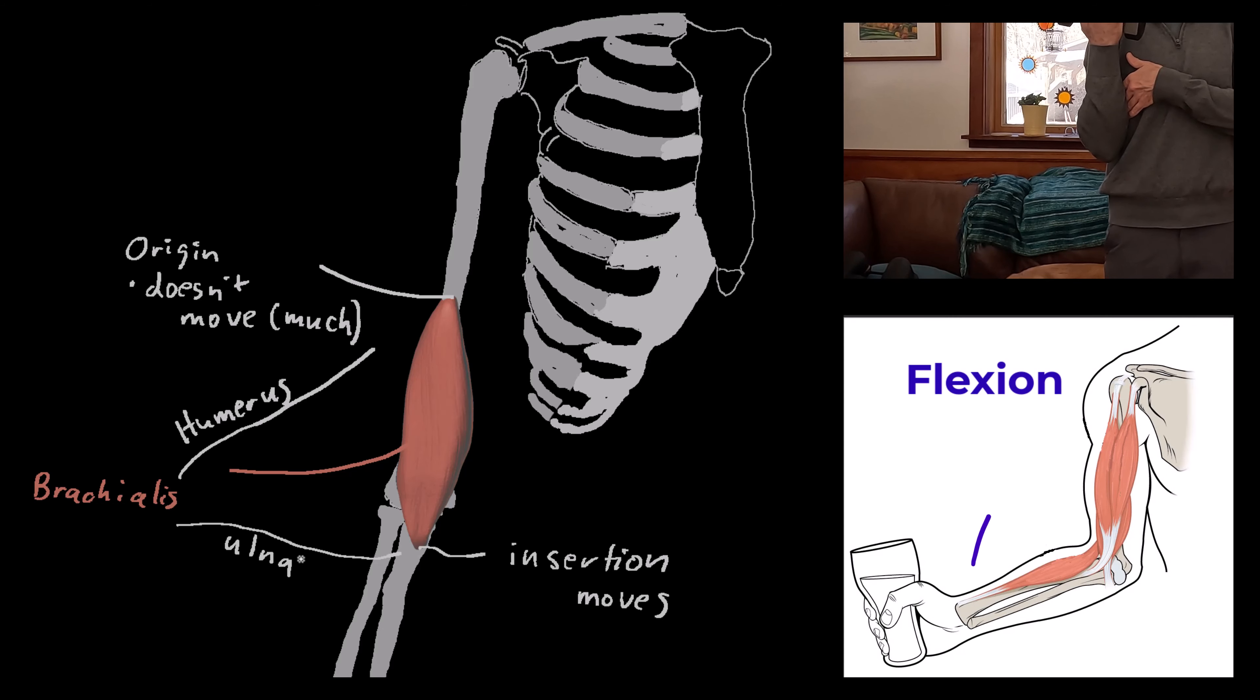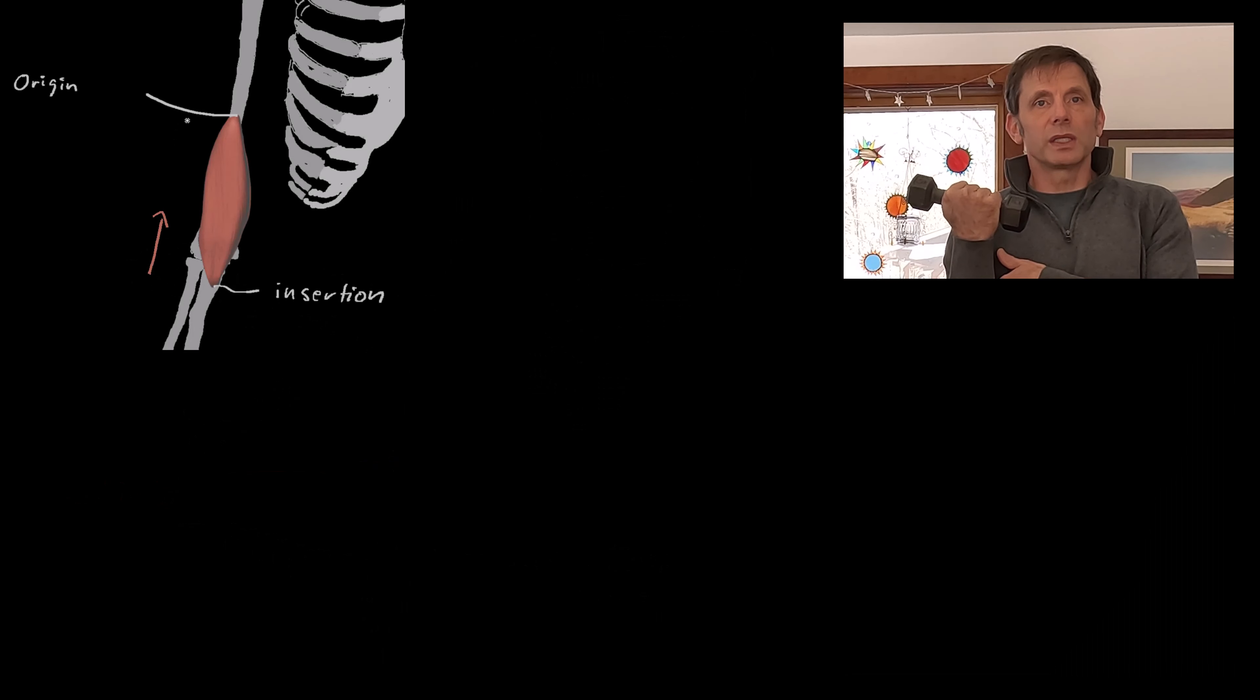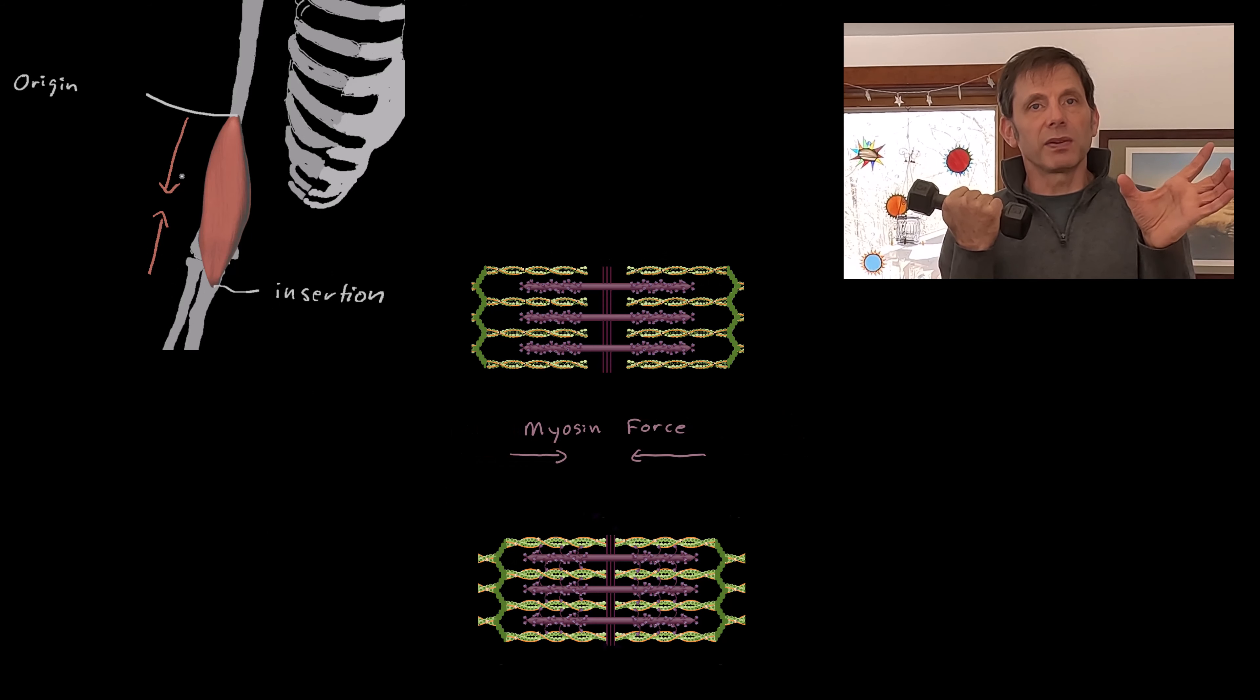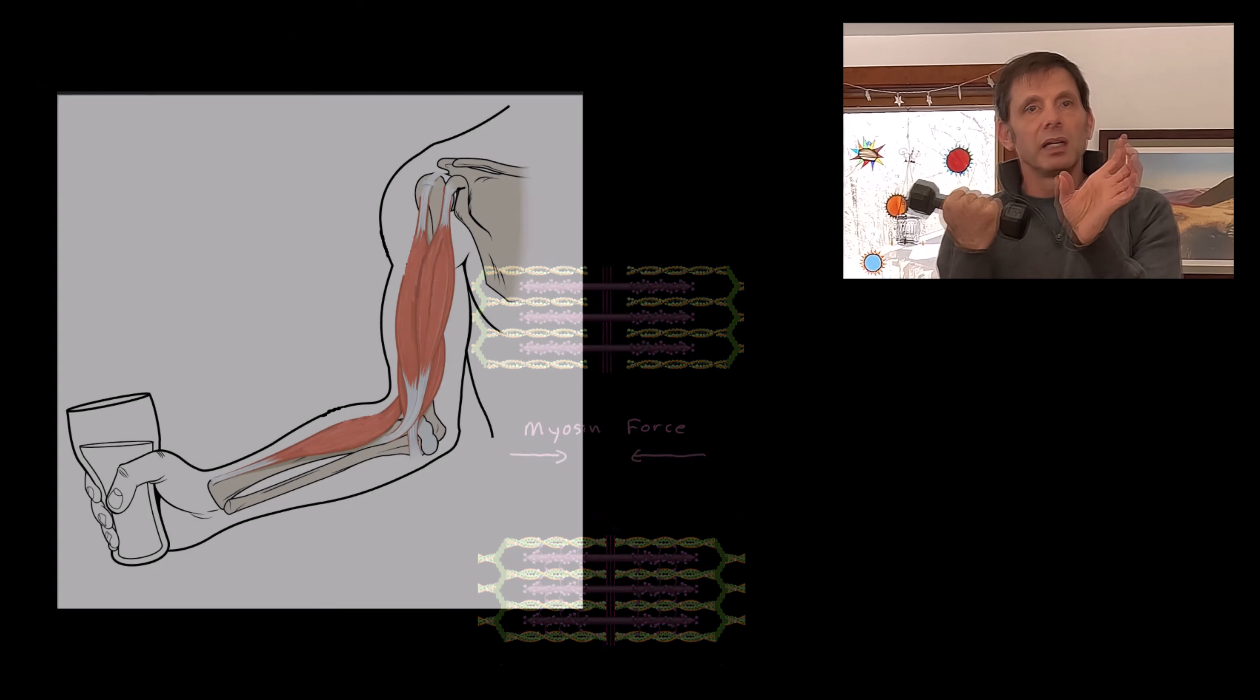Skeletal muscle is attached to bone at an origin and an insertion. The origin is the less movable attachment, and the insertion is more movable. In the case of the brachialis, the origin is on the humerus, and the insertion is the forearm.